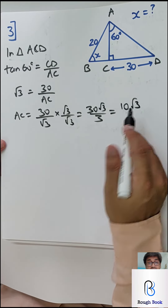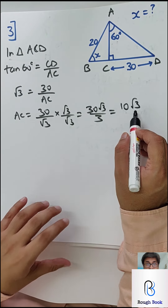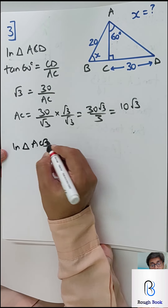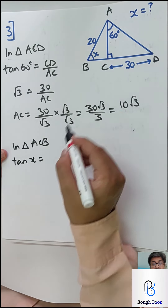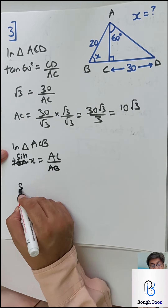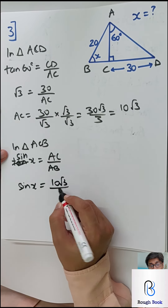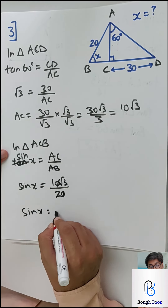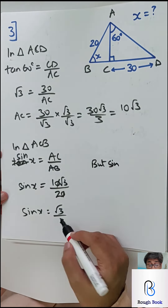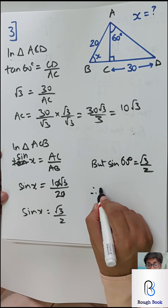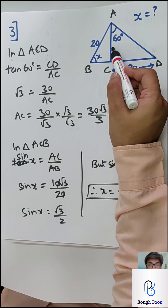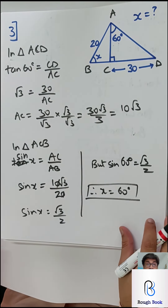Now getting into the other triangle ACB. Sine X equals AC upon AB — opposite upon hypotenuse. AC we just got is 10 root 3, and AB is 20. So sine X equals 10 root 3 upon 20, which is root 3 upon 2. Sine of what angle is root 3 upon 2? Sine 60. Therefore X equals 60 degrees. We used triangle ACD to find AC, then used that AC for triangle ACB to find X. That's the connection — isn't it amazing?